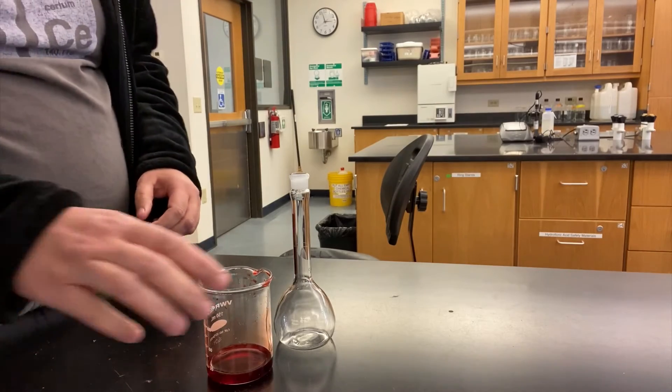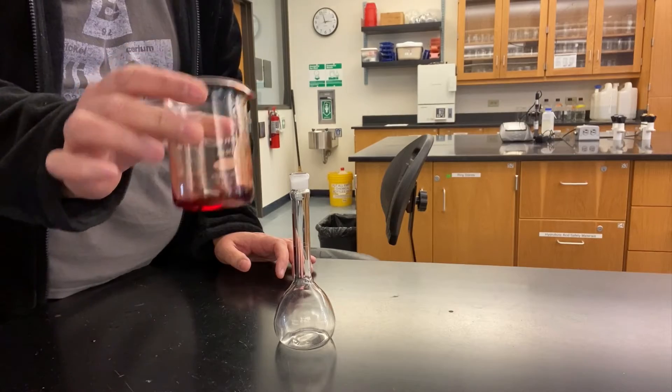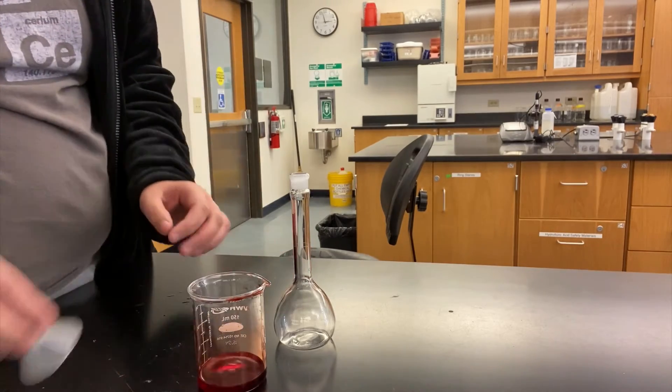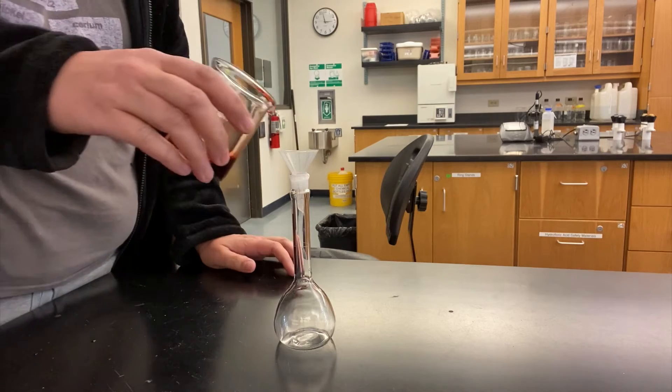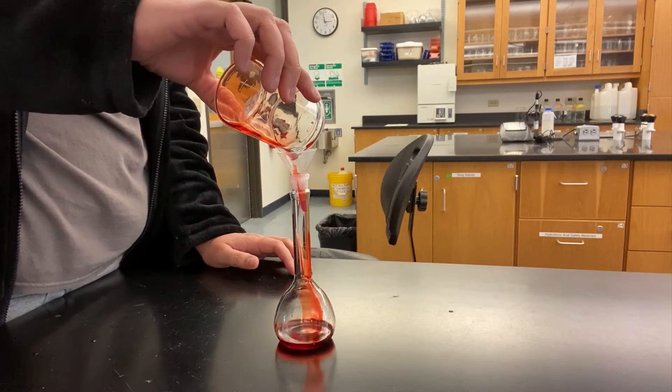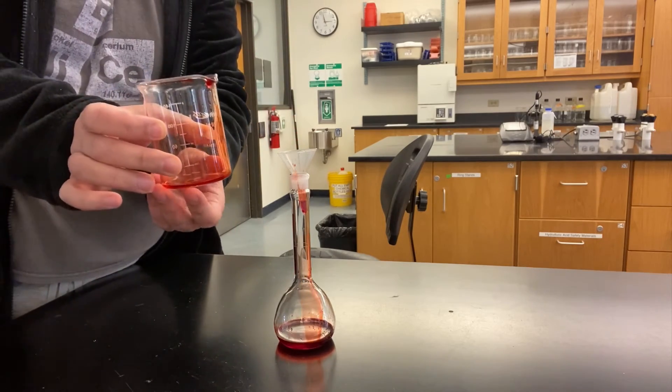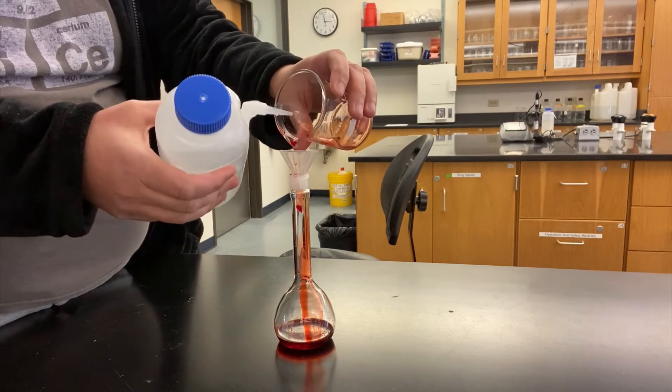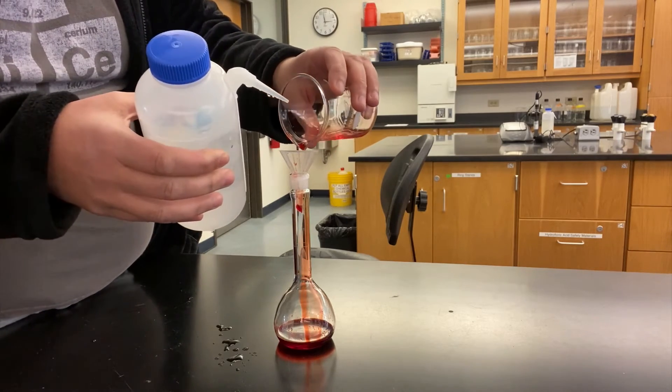What I've just showed you is just one technique that could be classified as quantitative transfer. Here are a couple more. In the previous example, we were transferring a solid to a volumetric flask, but sometimes you're doing a similar transfer with a liquid or solution. This sort of quantitative transfer works the same way. You'll first use a funnel to transfer as much of the solution into the volumetric flask as you can, then rinse down the beaker into the flask using a squirt bottle.